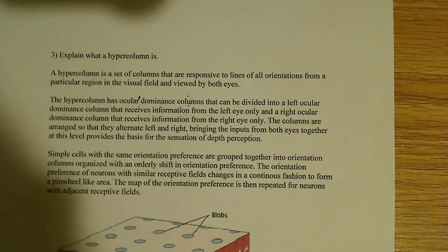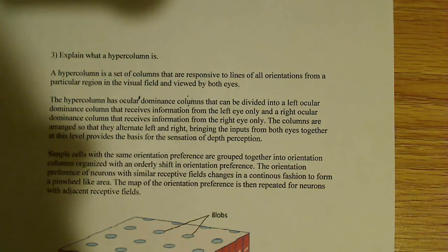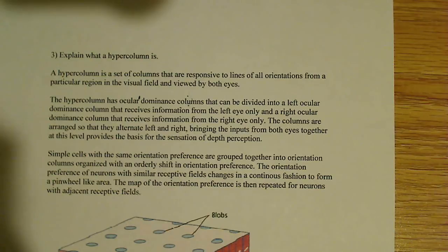All right, the next thing I want to talk about is the hypercolumn, and essentially the question says, what is a hypercolumn? So a hypercolumn is a set of columns that is responsive to lines of all orientations from a particular region in the visual field and viewed by both eyes.